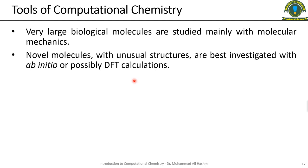Our research group will primarily use density functional theory because the balance of accuracy and computational cost is quite favorable. When we talk about computational chemistry, we consider both cost and accuracy. Cost here means computational cost — the processor, RAM, and memory resources required. As the method becomes more sophisticated, both cost and accuracy increase.